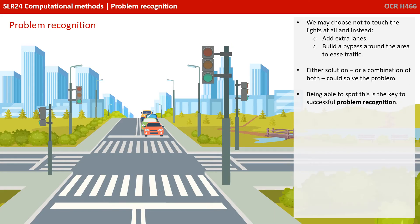We may choose not to touch the lights at all and instead add extra lanes and build a bypass around the area to ease traffic. Either solution, or a combination of both, could solve the problem. Being able to spot this is the key to successful problem recognition.